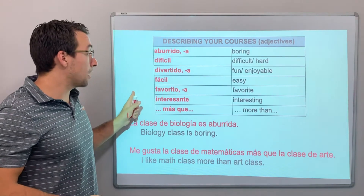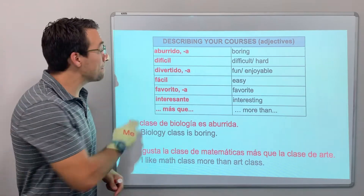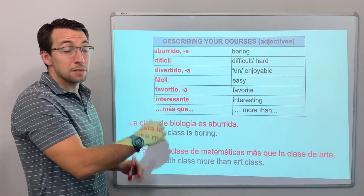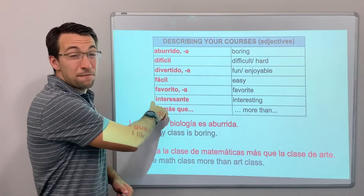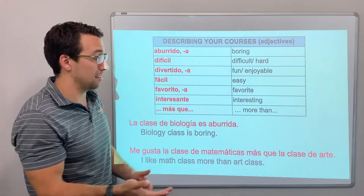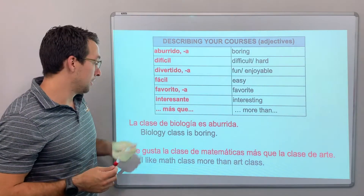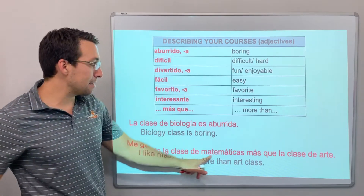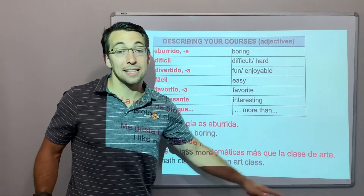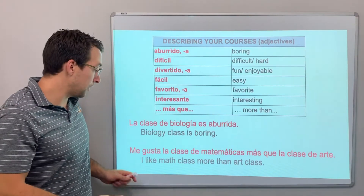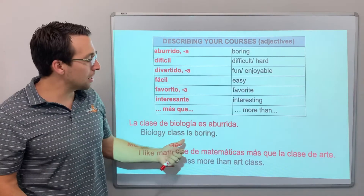La clase de arte es mi clase favorita — it's my favorite class. La clase de filosofía es interesante. Me gusta la clase de matemáticas más que la clase de arte — I like math more than art. La clase de biología es aburrida — biology class is boring.